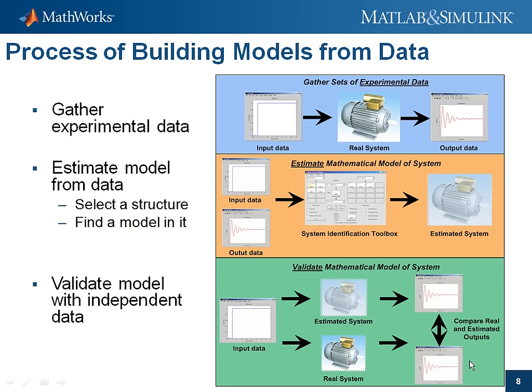We will now discuss the general nature of system identification. The workflow follows this scheme: first, collect experimental data — ideally at least two datasets, one for estimation and one for validation. Then estimate models from data by deciding what model structure to use and finding the best model in that structure. Finally, validate the model by confronting it with independent data sets to ensure we have not overfitted. In this process we also get measures of model uncertainty and how much the output is affected by disturbances, which may be quite useful for robust control design.